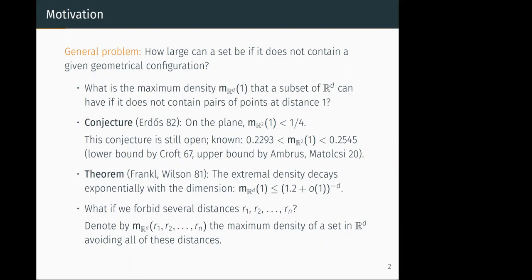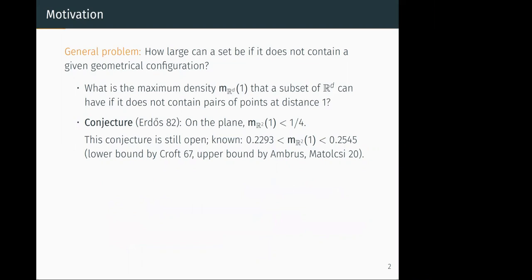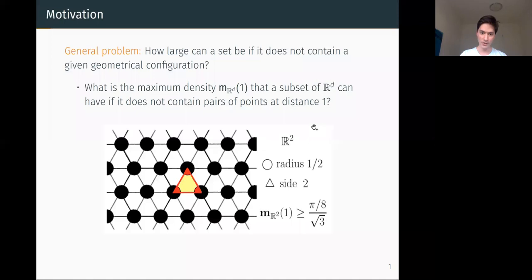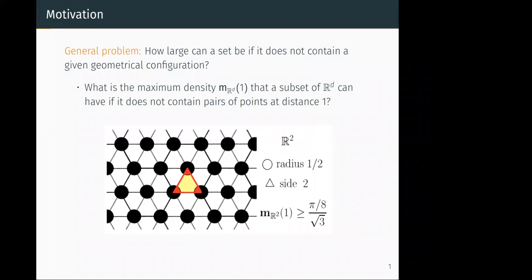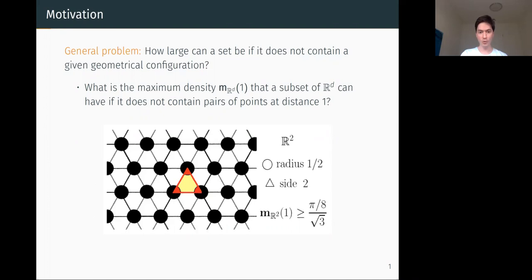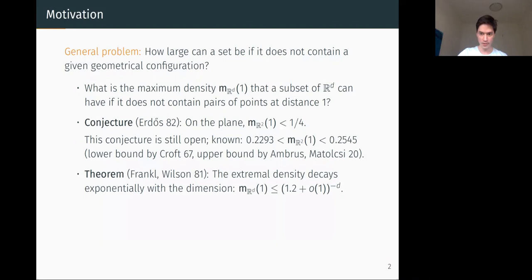Question from the audience: for the Frankl-Wilson theorem, if we use the lattice packing idea from the previous slide, what does it give as a lower bound? Answer: for R^2 specifically it gives about 0.226. For R^d we can do the same thing, and it also gives an exponential lower bound. The Frankl-Wilson theorem is an exponential upper bound. The lattice packing lower bound is worse, but I don't know exactly what it gives.